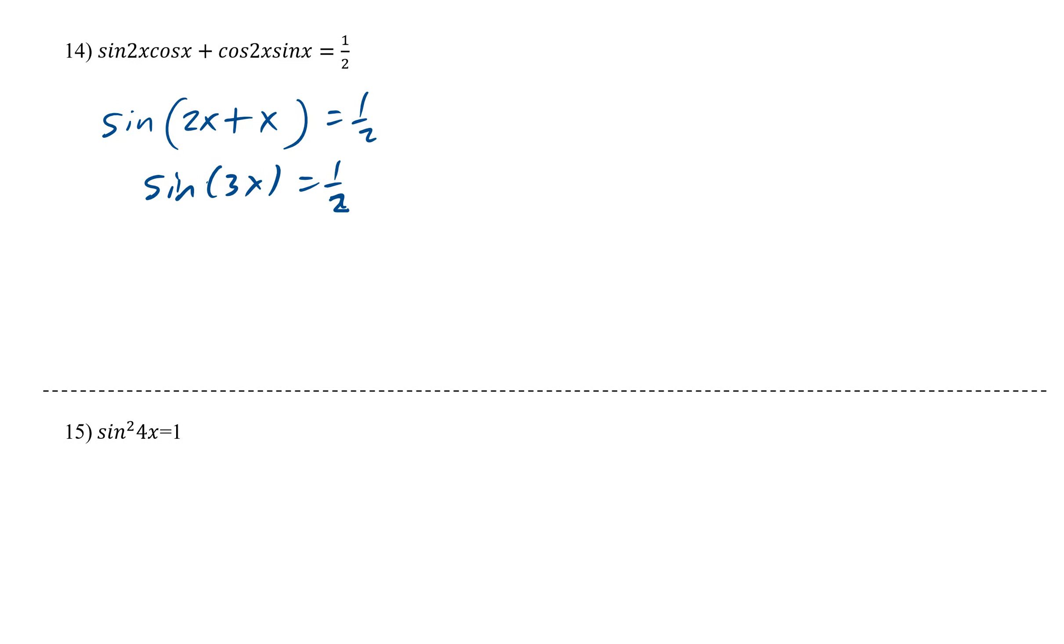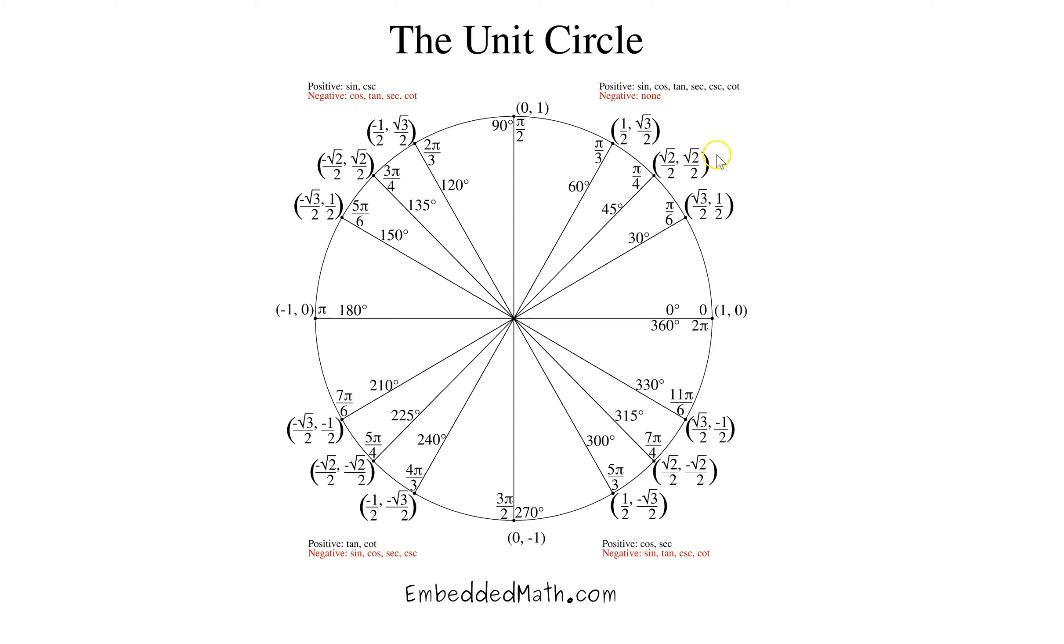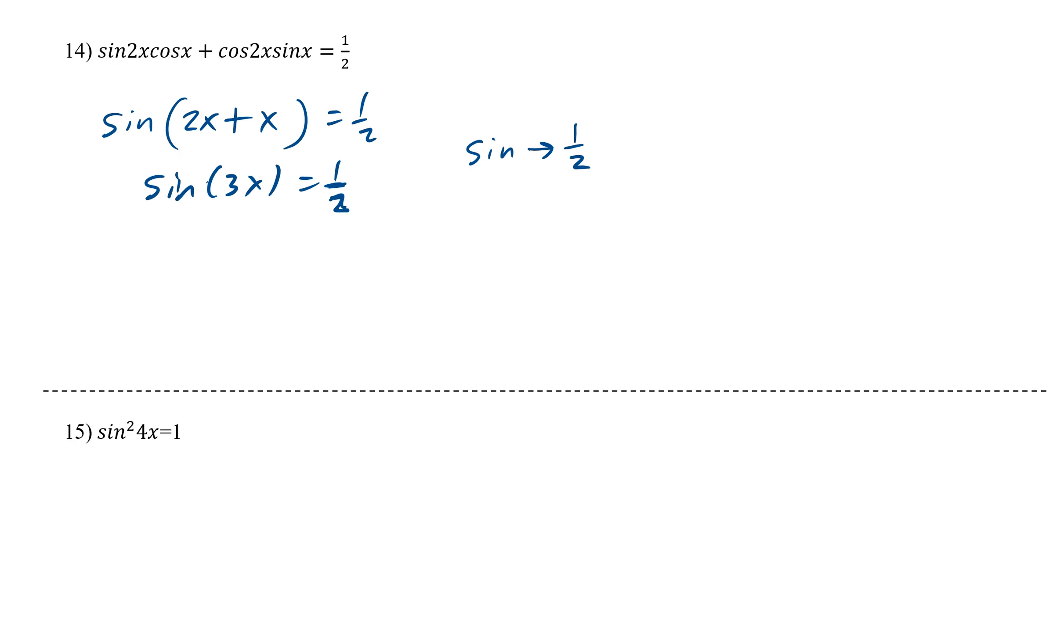Now we're going to look at our unit circle. Again, we're just focusing on when does sine equal a half. So it equals a half at π over 6, and it also equals a half at 5π over 6. So we now write 3x equals π over 6, and 3x equals 5π over 6.